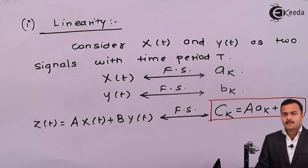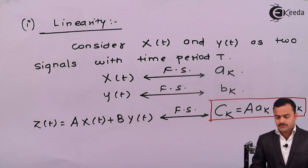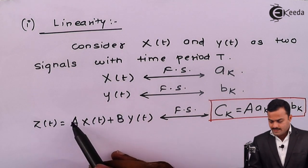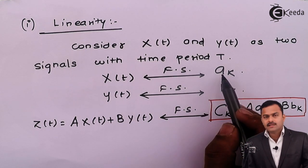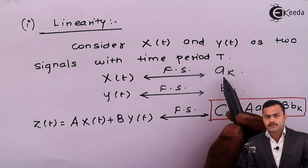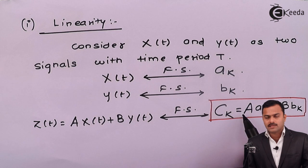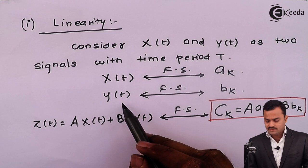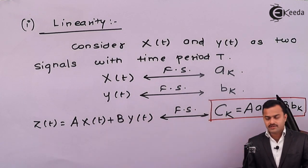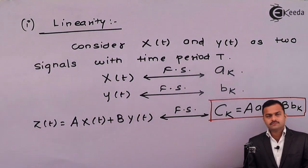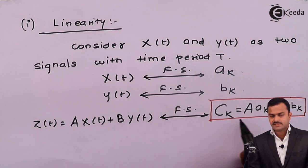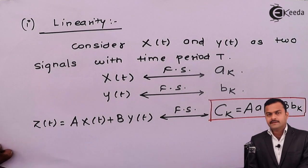So it's quite simple that this is obeying the property of superposition and homogeneity. A is getting multiplied with x of t, and similarly on the output side the Fourier series coefficient will also get multiplied with the same constant capital A. A similar exercise will be there for y of t. So we will get this particular Fourier series coefficient for z, which is nothing but a linear combination of x and y. Let's go to the next property which is time shifting.